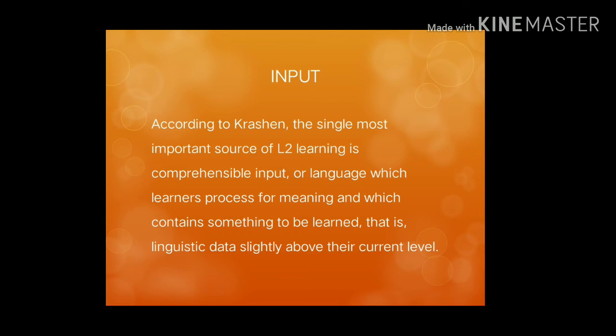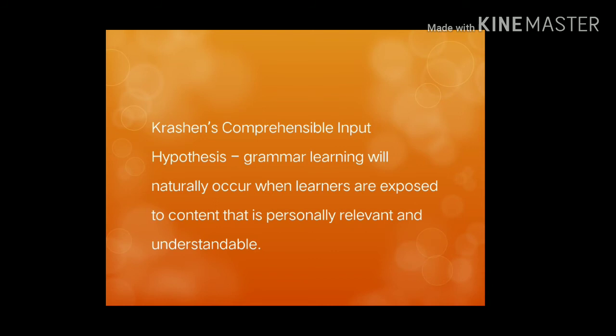The next of the five ingredients is input. According to Krashen, the single most important source of second language learning is comprehensible input — language which learners process for meaning and which contains something to be learned, i.e., linguistic data slightly above the current level.